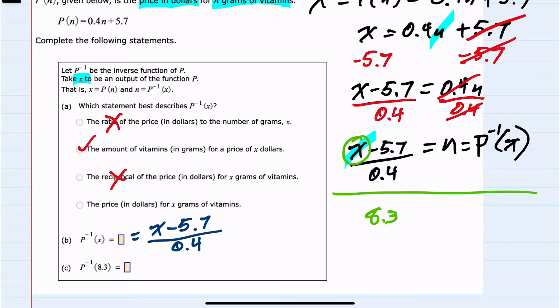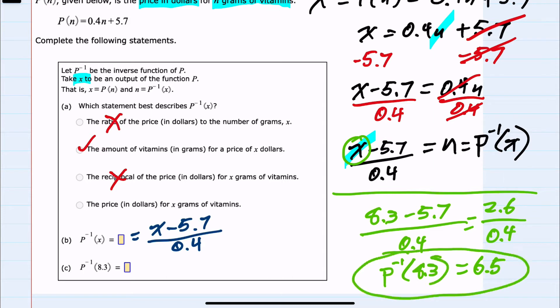So 8.3 minus 5.7 over 0.4, which simplifies to 2.6 in the numerator divided by 0.4, equals 6.5. That is our P inverse of 8.3, and that means $8.30 would buy 6.5 grams of this vitamin.